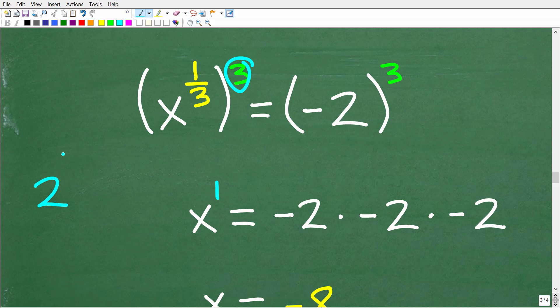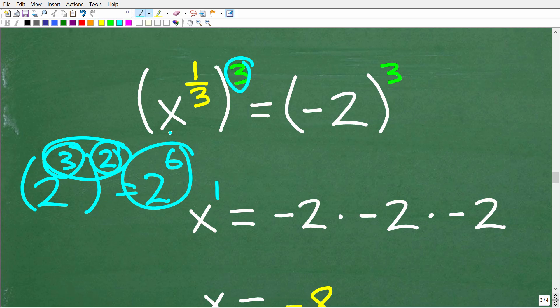Now, there is a property of powers and exponents. Let's just make sure you understand it. If I have 2 3rd squared, this is equal to 2 to the 6th power. So you can multiply the outside exponent to the inside exponent. Of course, the answer here is 2 to the 6th power.